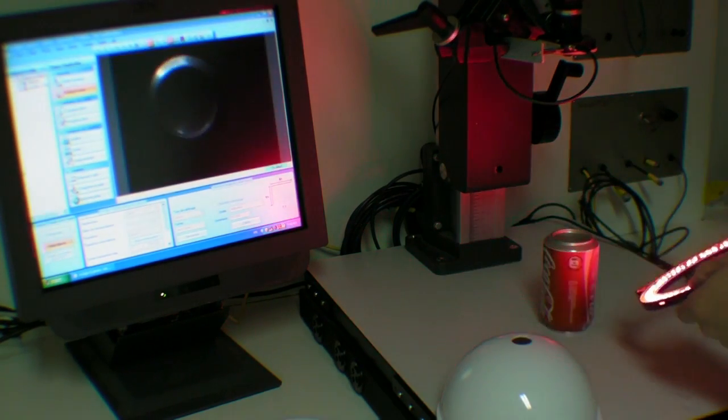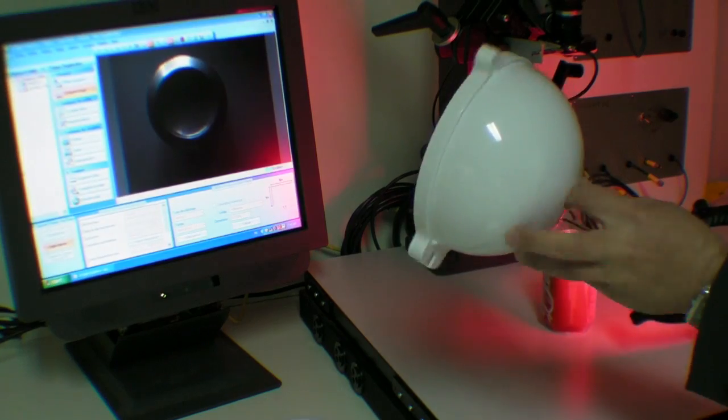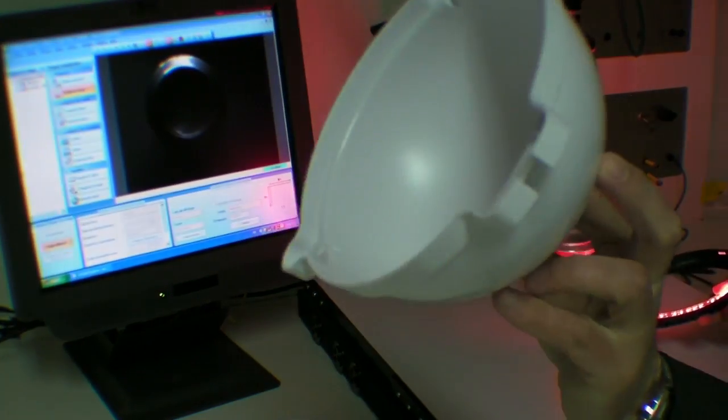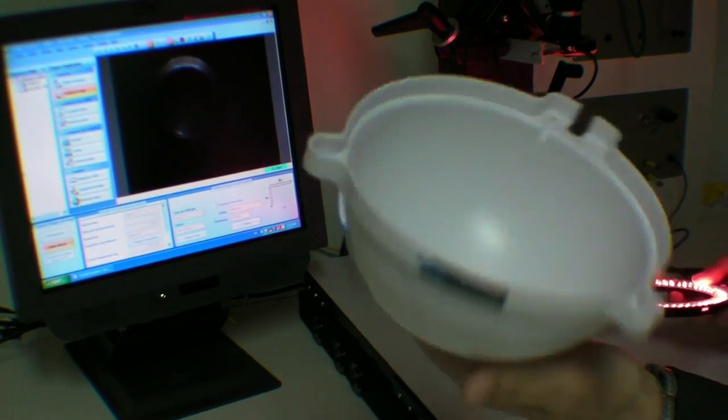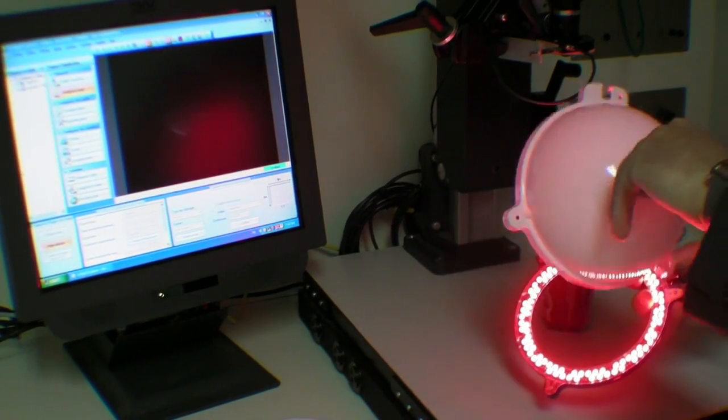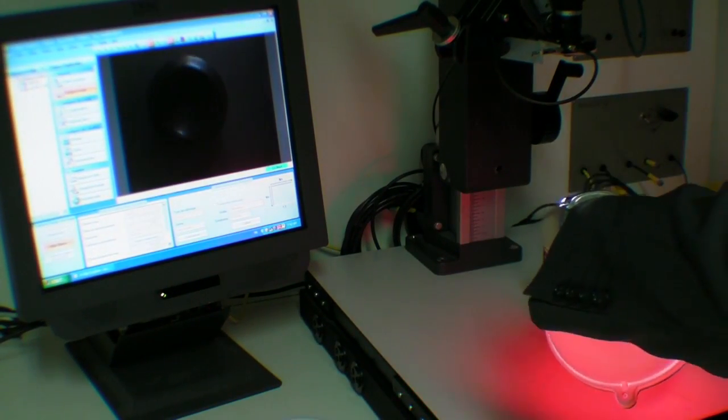I will now show you what happens when you use this accessory, which is a dome that can be easily fitted to the ring. Just put it on top of the ring like this. The hole in the top is where the camera goes.